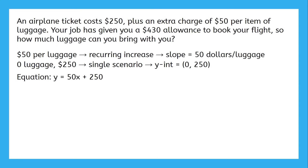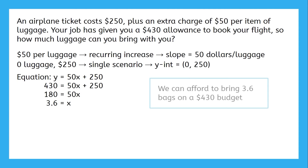The question wants to know how many bags we can afford on a budget of $430. Y is the total cost of the trip, so we plug in 430 for y and solve for x — how many bags we can bring — by subtracting 250 then dividing by 50. We get 3.6 bags. What does 3.6 bags mean? Are we going to fill a bag only three-fifths of the way? That would still count as a whole bag, so this answer doesn't work because it doesn't make sense.